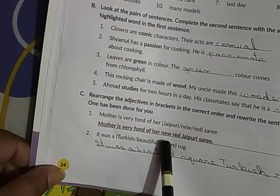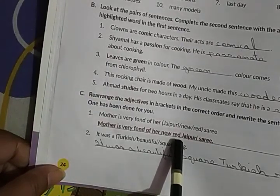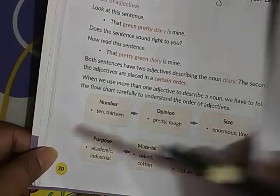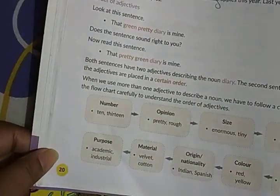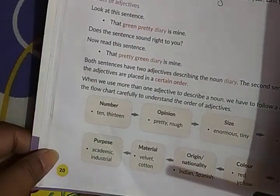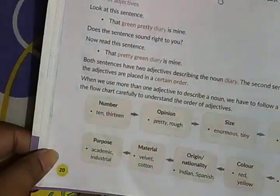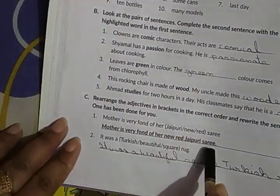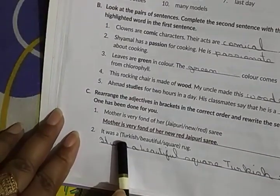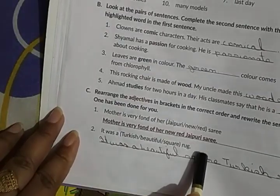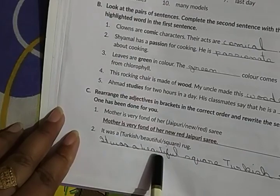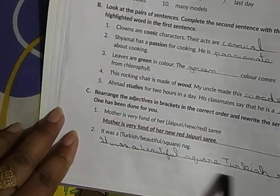First we mention age — that was new. Then color — red. Then origin — Jaipuri. So the order is: new red Jaipuri sari. Next: it was a — brackets: Turkish, beautiful, square, rug. The answer: it was a beautiful square Turkish rug. Beautiful is opinion, square is shape, Turkish is origin. So you place them in the sequence: opinion, shape, origin.